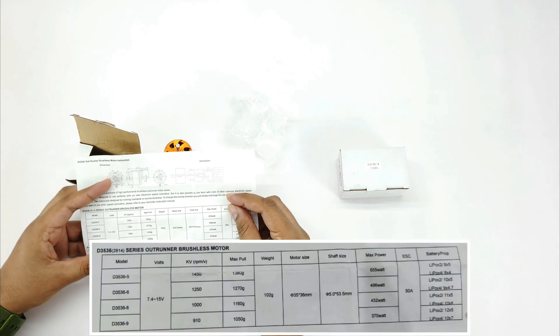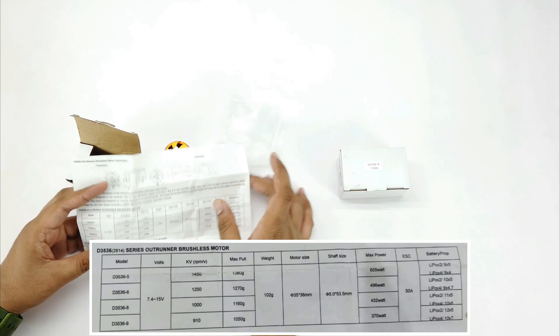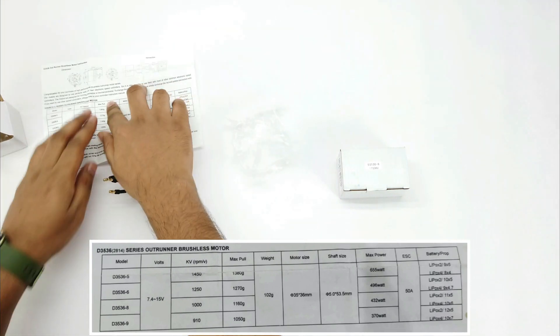The rated thrust of this 1000kV motor given here is 1160 grams and its weight is 102 grams. So let's check whether this specification is correct or not.